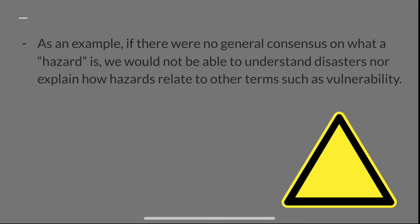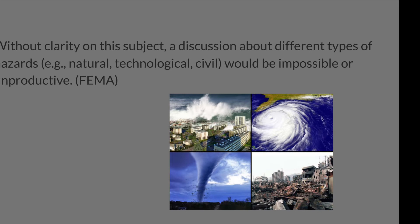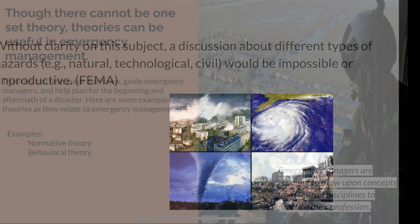As an example, if there were no general consensus on what a hazard is, we would not be able to understand disasters nor explain how hazards relate to others in terms such as vulnerability. According to FEMA, without clarity on this subject, a discussion about different types of hazards — for example, natural, technological, civil — would be impossible or unproductive.